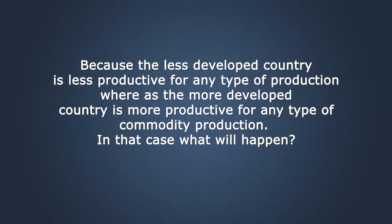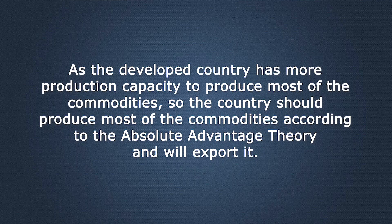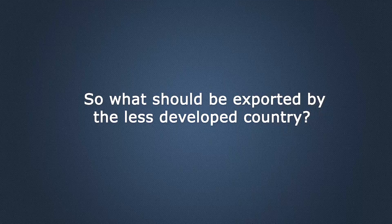Why? Because the less developed country is less productive for any type of production, whereas the more developed country is more productive for any type of commodity production. So in that case, what will happen? If there is trade between a developed country and an underdeveloped country, as the developed country has more production capacity for most commodities, it should produce most of them and export. As the less developed country doesn't have that productive capacity, it should not produce anything and will just import. So there is no commodity for the less developed country to export — there will be no exchange and trade will stop.